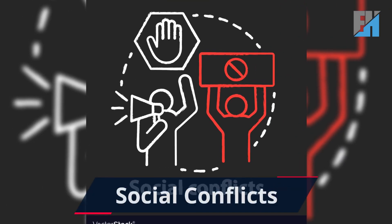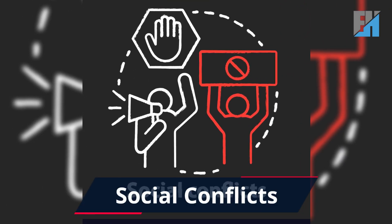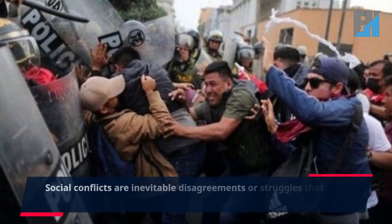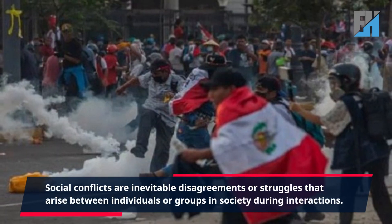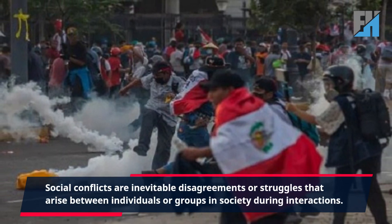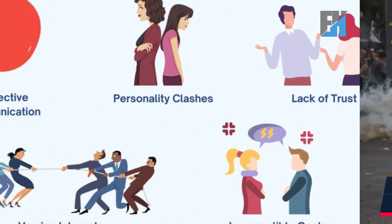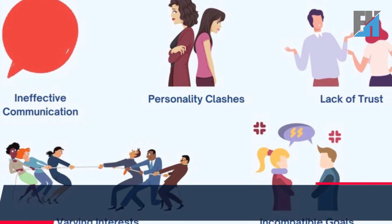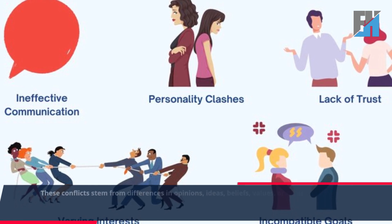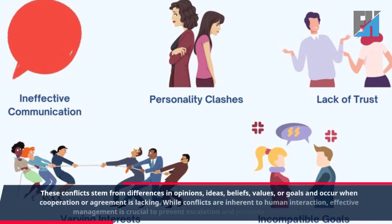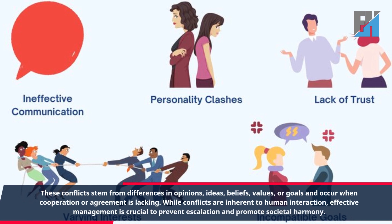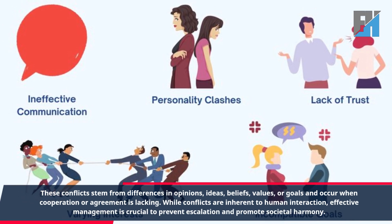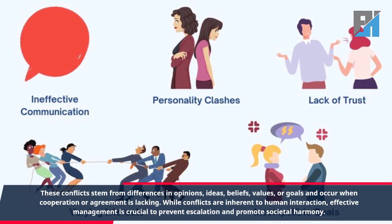In today's class we will discuss the topic of social conflicts. Social conflicts are inevitable disagreements or struggles that arise between individuals or groups in society during interactions. These conflicts stem from differences in opinions, ideas, beliefs, values, or goals, and occur when cooperation or agreement is lacking. While conflicts are inherent to human interaction, effective management is crucial to prevent escalation and promote societal harmony.